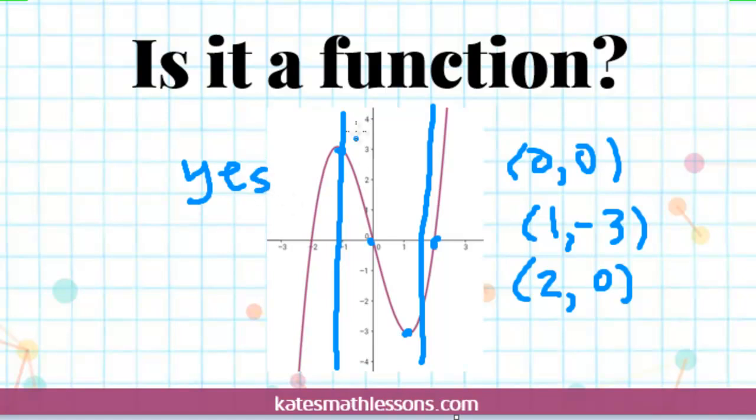So anytime you draw vertical lines, they can only cross the graph in one spot. If a vertical line crosses the graph more than once, that means it's not a function.